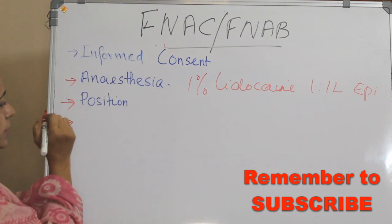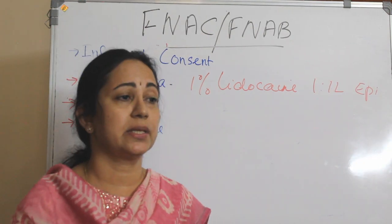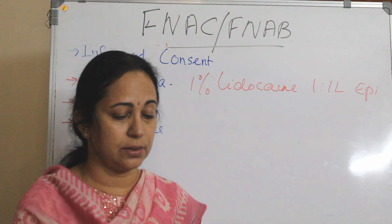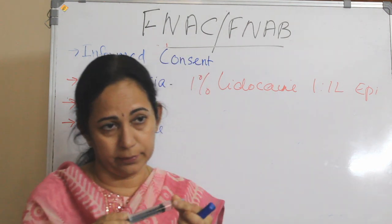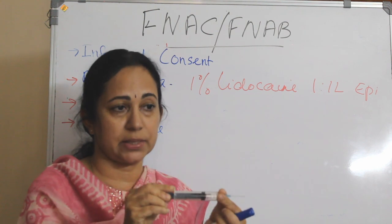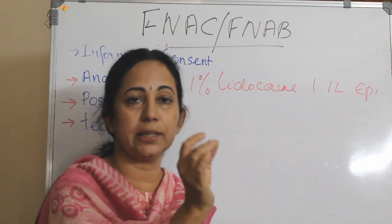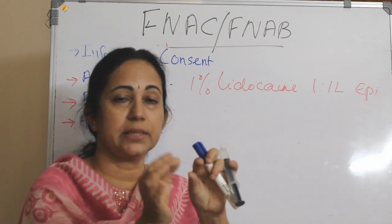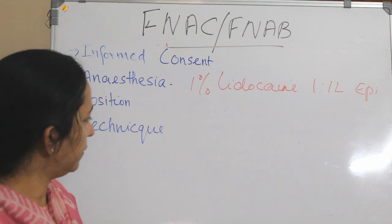There are basically two techniques: one with aspiration and one without aspiration. With aspiration, as the name suggests, you use the needle with the syringe with aspiration, keeping at least 1 ml of air, and at the time of movement into the lesion you apply negative suction. Without aspiration, you simply put the needle into the target so that with capillary action the material collects inside the needle. In both techniques, there are four basic steps.